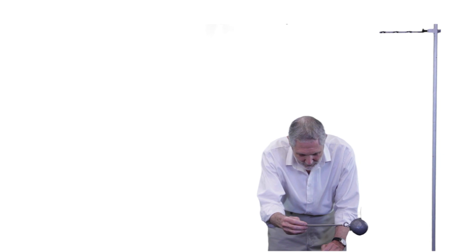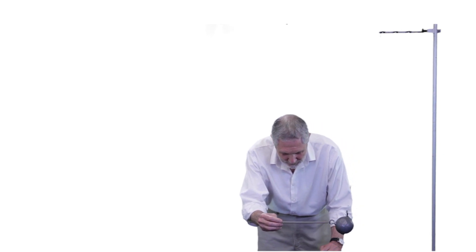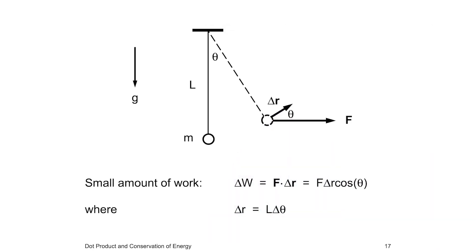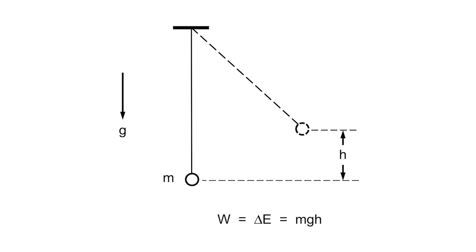We can calculate the work, but this is not easy. Note that theta is continually changing. Also, we need to determine f such that the mass is always in equilibrium. Finally, we need to integrate over theta to find the total work. But we do not need to do the integral. Energy conservation immediately tells us what the result has to be. The work is identical to the gain in potential energy, which is just MGH.